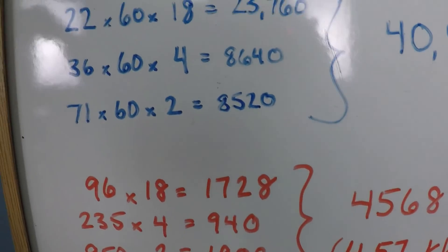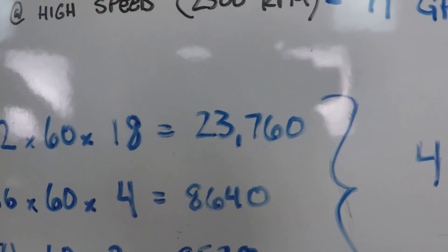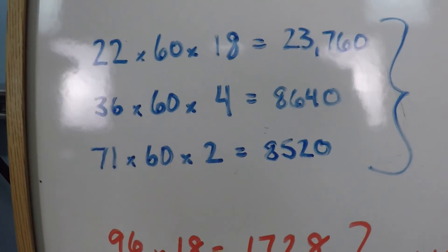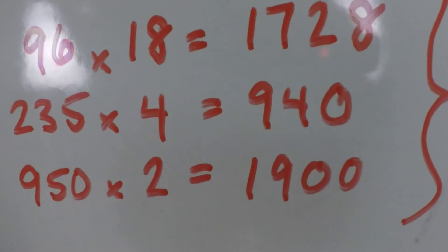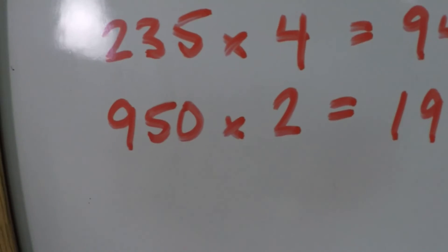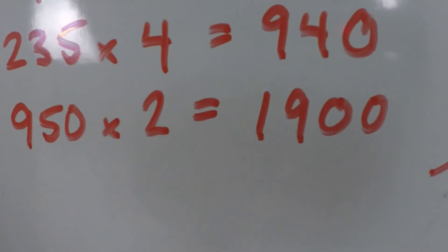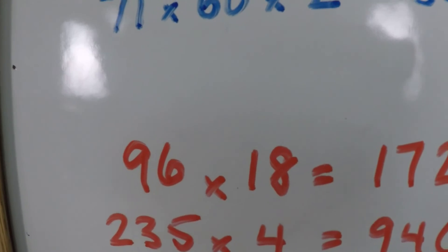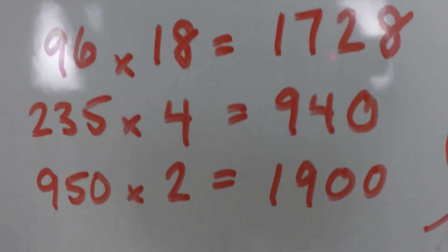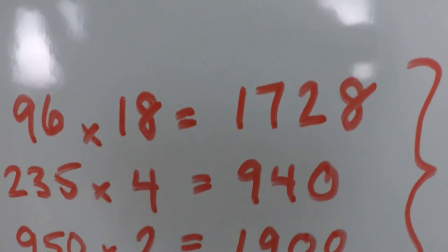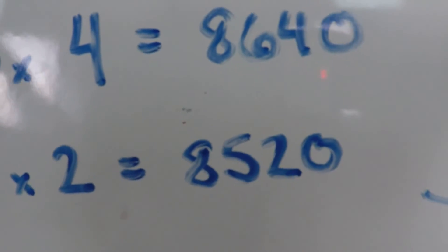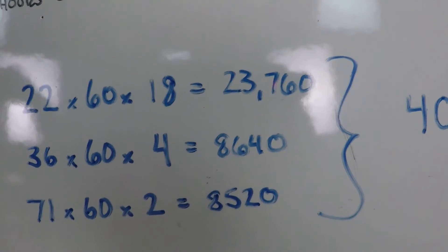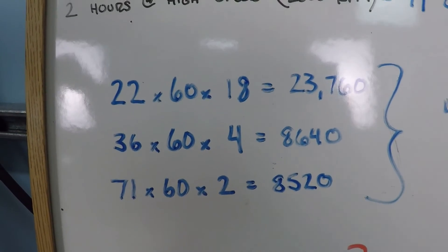Let's take a look at some of the interesting things here. Remember I was saying about that low speed operation: 23,000 gallons from the low speed versus 8 and 8 from the other two. But look at the power consumption here. So at 2 hours at higher speed, not even maximum, but higher speed, you use 1,900 watts of power. 18 hours at the lower speed only use 1,728. So you use more power in 2 hours than 18 hours. You use more power for 8,520 gallons than you do 23,760. That's how variable speed pumps work. That's how you save money with them.